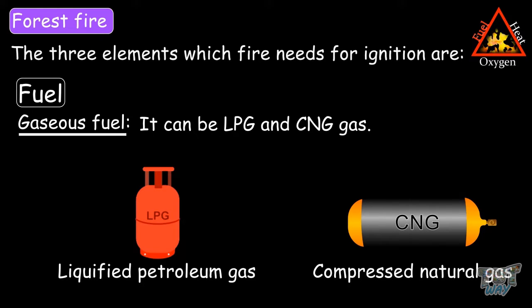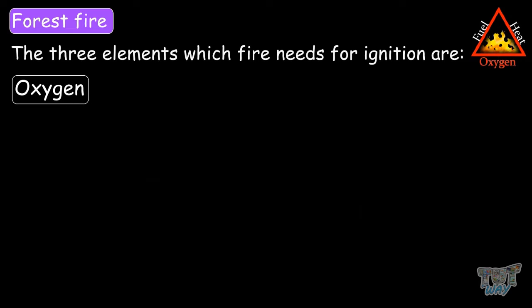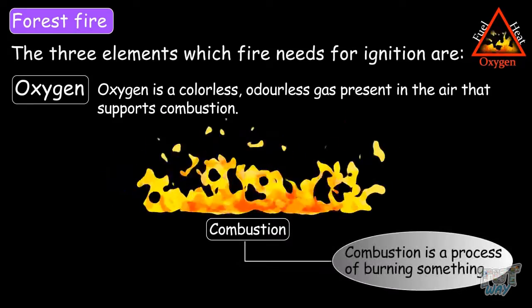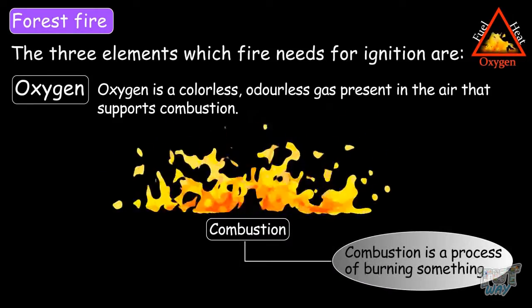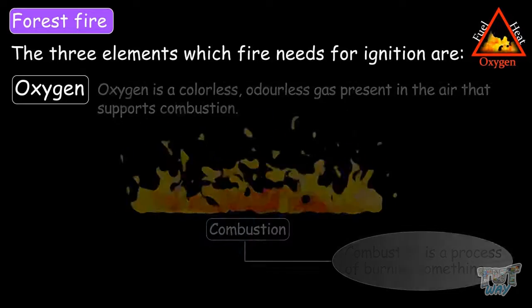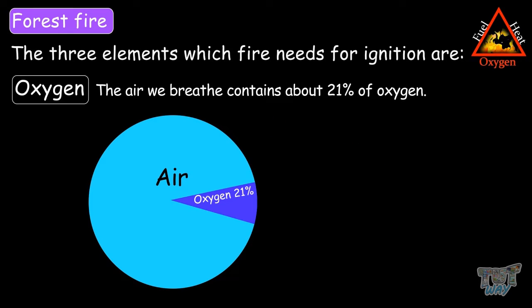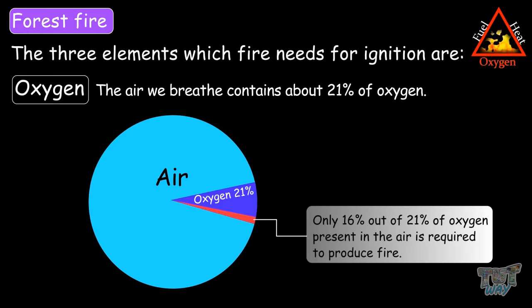Now, the second element that is needed for a fire is oxygen. Oxygen is a colorless, odorless gas present in the air that supports combustion, and combustion is the process of burning something. The air we breathe contains 21% oxygen, and only 16% out of the 21% present is required to produce fire.